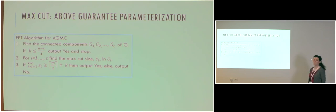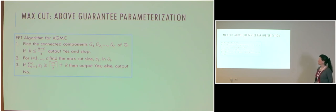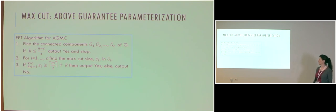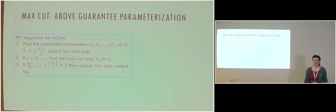Here is a simple algorithm for above-guarantee MaxCut. We start by finding the connected components G1 to Gc. If the parameter K is at most (n minus c) over 4, we output yes and stop. Otherwise, we find in each connected component a cut of maximum size Si. We sum the sizes of the max cut and check whether the overall cut size is at least m over 2 plus K; if yes we output yes, else no.